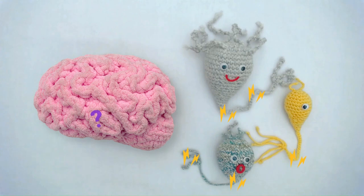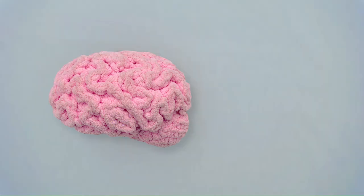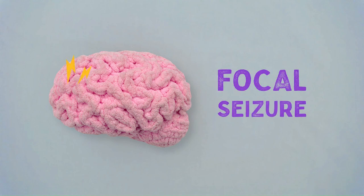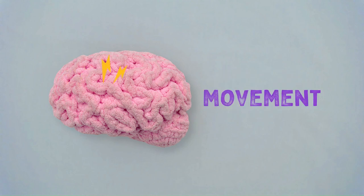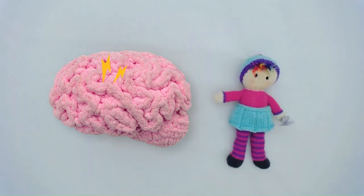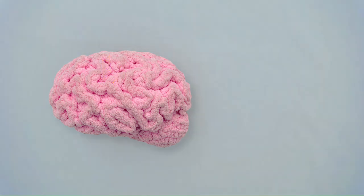Sometimes a seizure will only happen in one part of the brain. This is called a focal seizure. If a seizure happens in part of the brain that controls movement, then the person might move their body in ways that they can't control. Other seizures might be caused by cheeky neurons in the speech centers of the brain, causing someone to make sounds or say things that don't make sense.